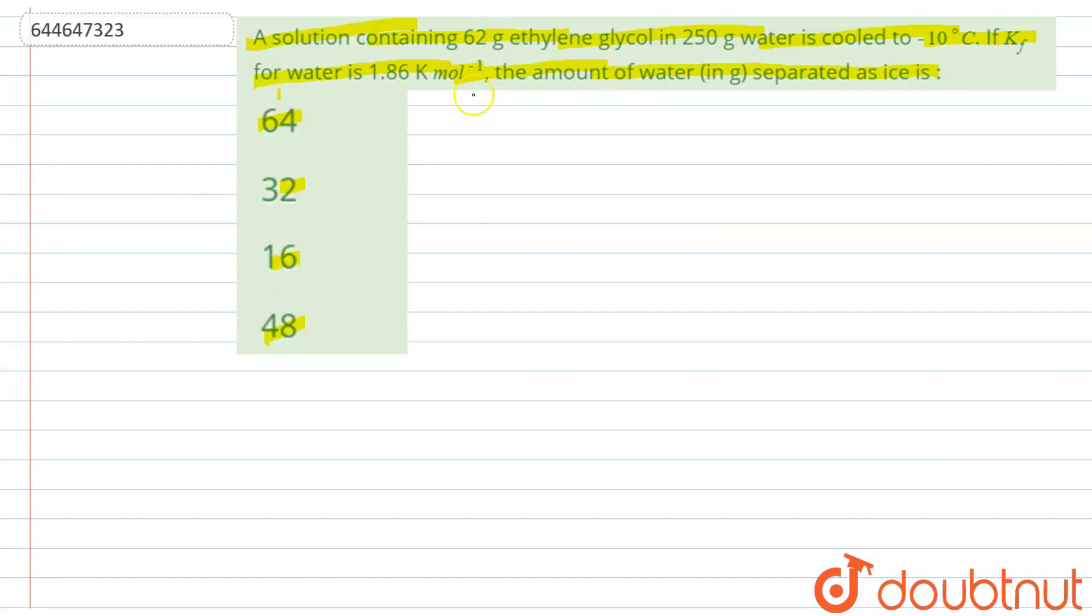So we are given the data here: ethylene glycol, 62 grams, is in 250 gram of water is cooled at minus 10 degree Celsius. And KF, that is molar depression constant of water, is given. We have to calculate the amount of water as ice.